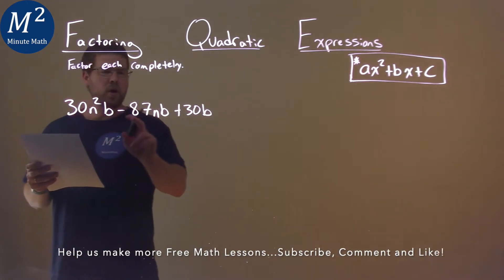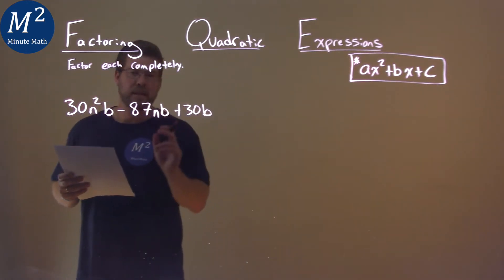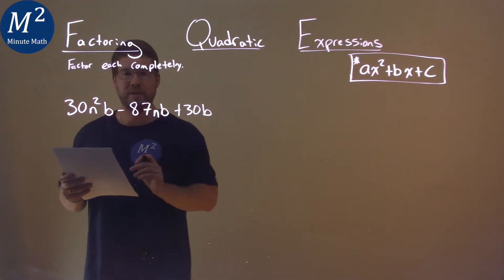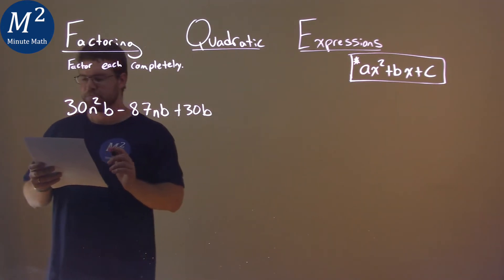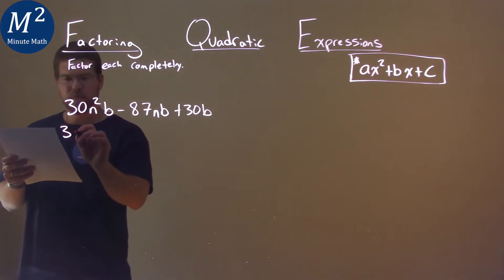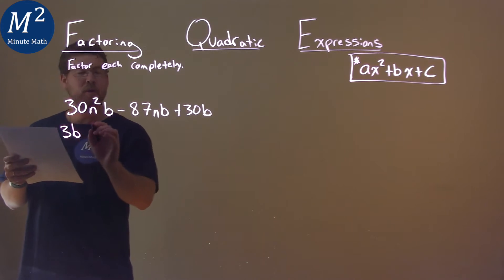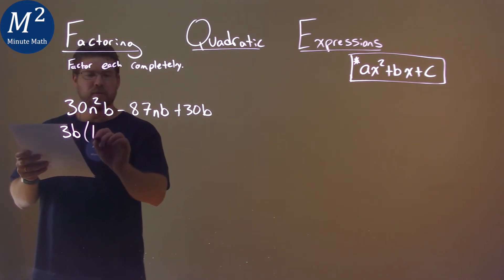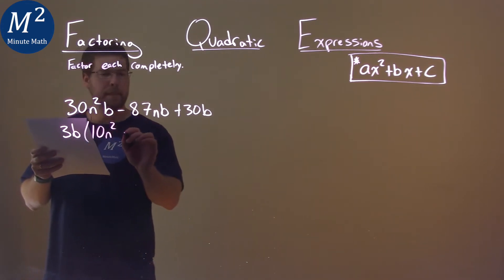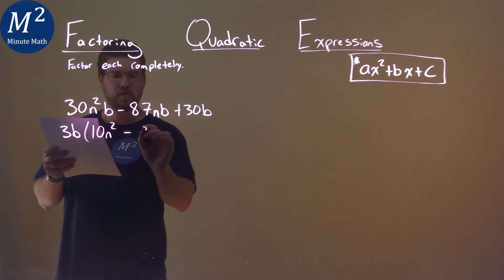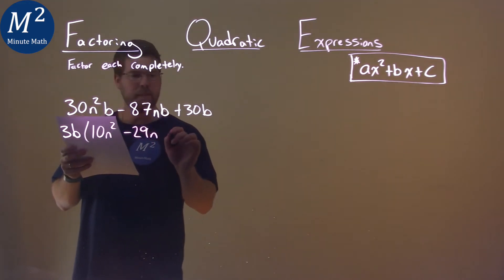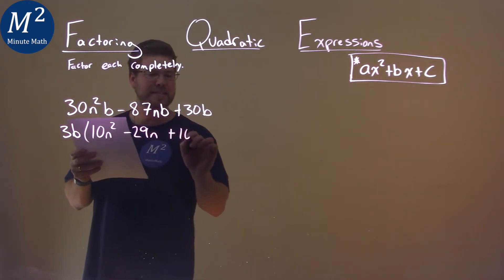I notice in all parts I see the letter b, as well as I can pull a 3 out of each part here. So let's do that. If I pull out a 3b, what am I left with? I'm left with 10n squared minus 29n plus 10.